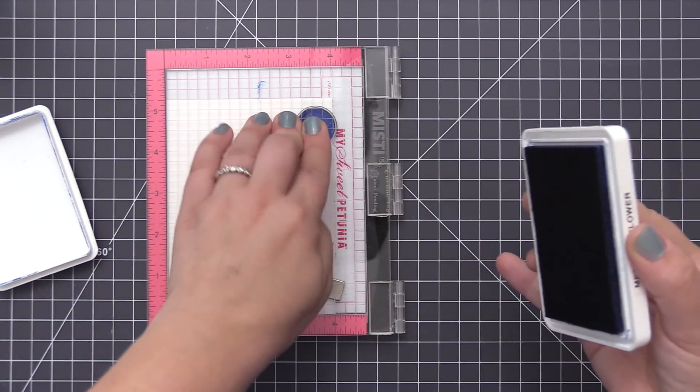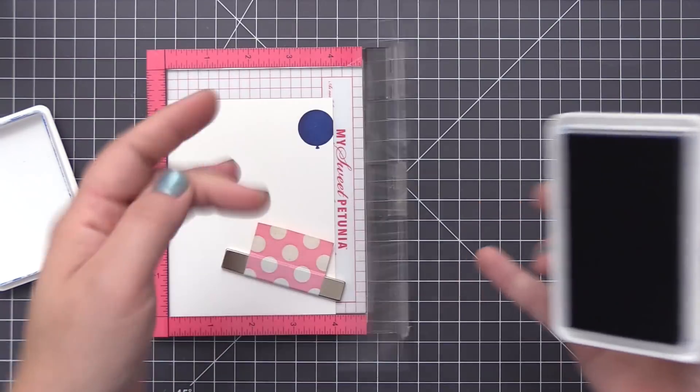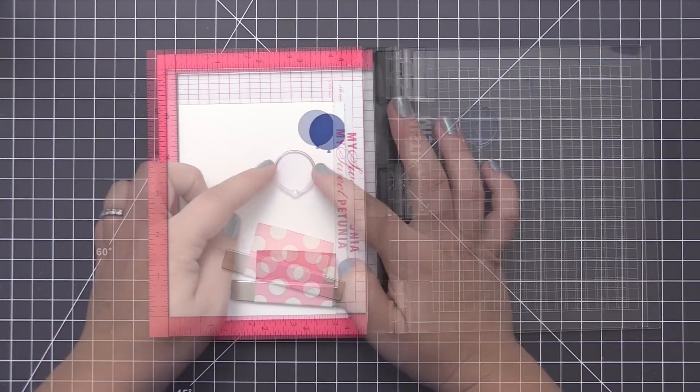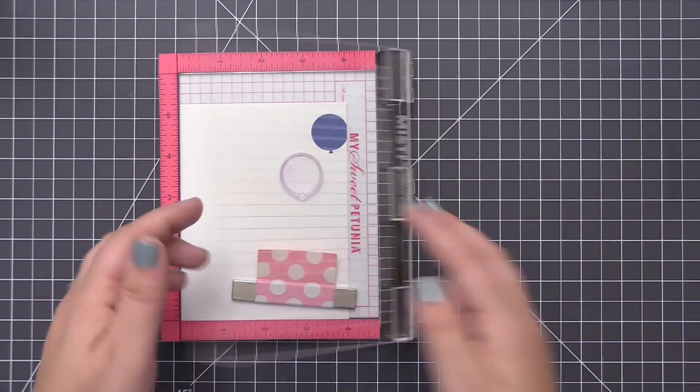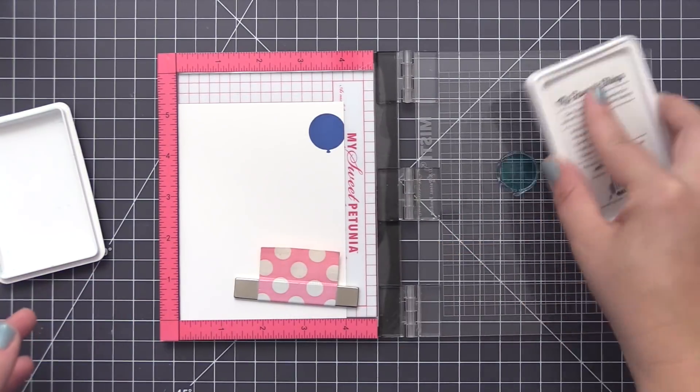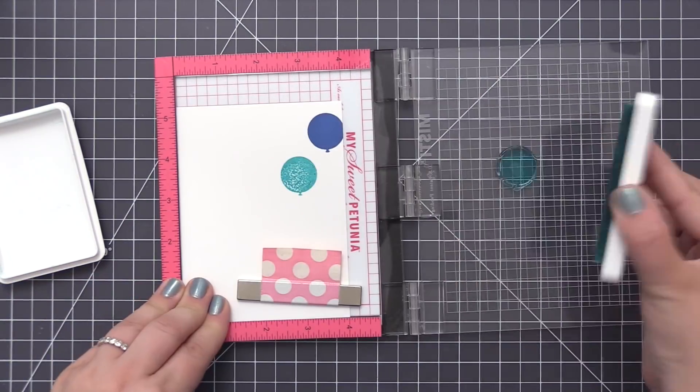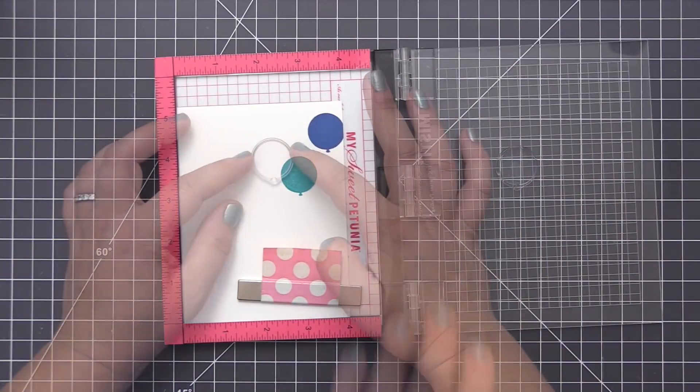I'm starting off my stamping with my cornflower ink, and this is just a really nice pretty blue color, a nice dark blue. Then I'm going to move on to my aqua color, so I'm going to be using blue raspberry for this next balloon, and I'm just going to continue in rainbow order with the different colors that I want to incorporate.